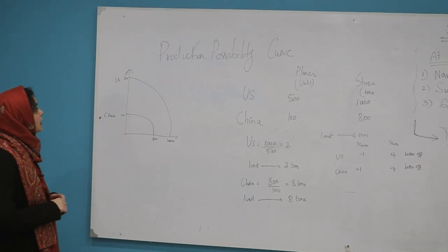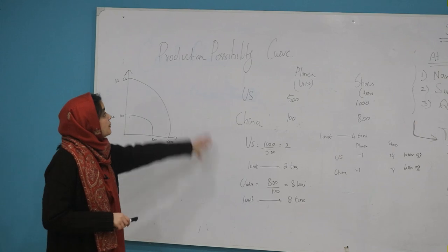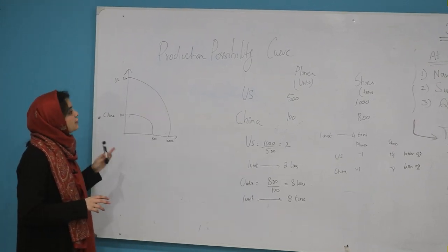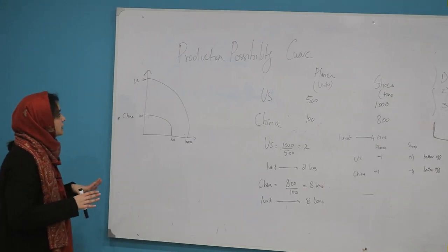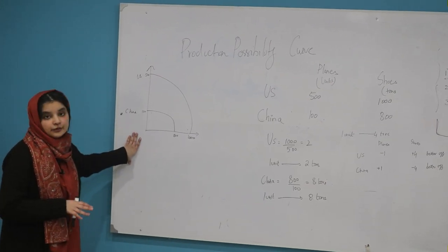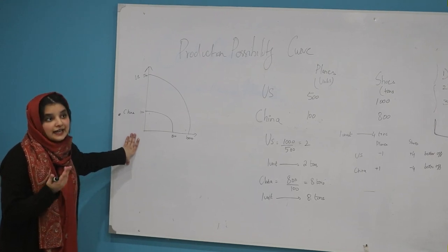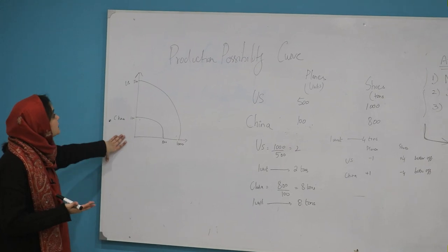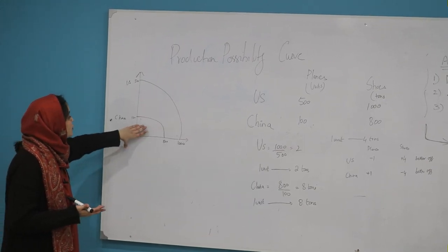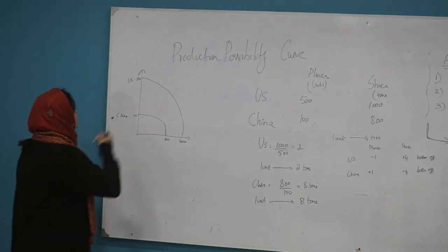First of all, we will learn the production possibility curve through one example. Production Possibility Curve shows two combinations of goods that one economy can make using all of their resources. In reality, it doesn't happen that only one economy will make two products - we make many products. But just to simplify things, economists have explained this production possibility curve using only two products.